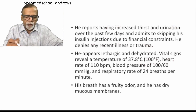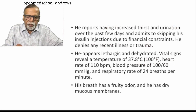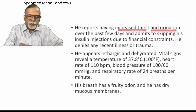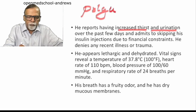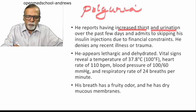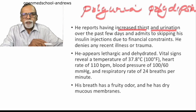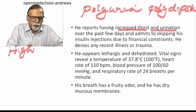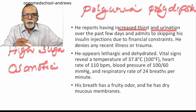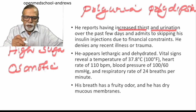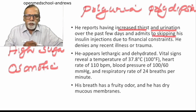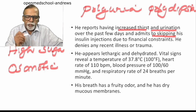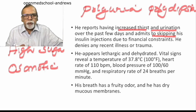Coming to the rest of the history, he reports increased thirst and increased urination — polyuria and polydipsia. These are characteristic symptoms of diabetes mellitus due to high blood sugar or hyperglycemia. High sugar leads to osmotic diuresis. Most likely the patient had skipped insulin, which produced hyperglycemia, osmotic diuresis, and increased thirst.